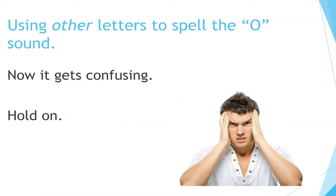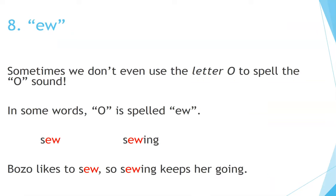Using other letters to spell the O sound — now it gets confusing, hold on. Number 8: EW. Sometimes we don't even use the letter O to spell the O sound. In some words, O is spelled EW. Examples: Sew, Sewing. Bozo likes to sew, so sewing keeps her going.